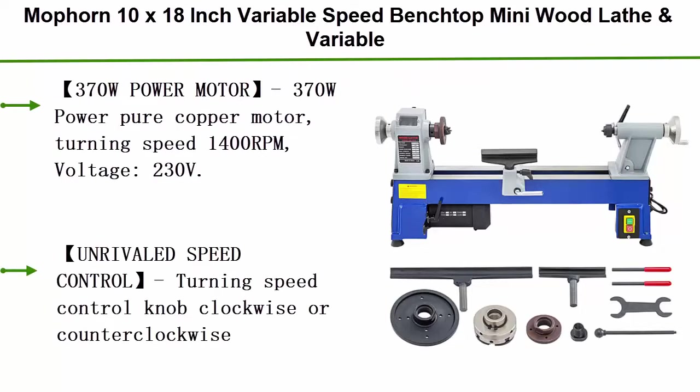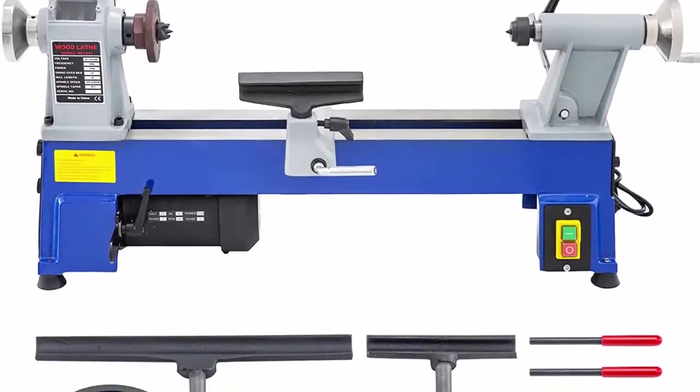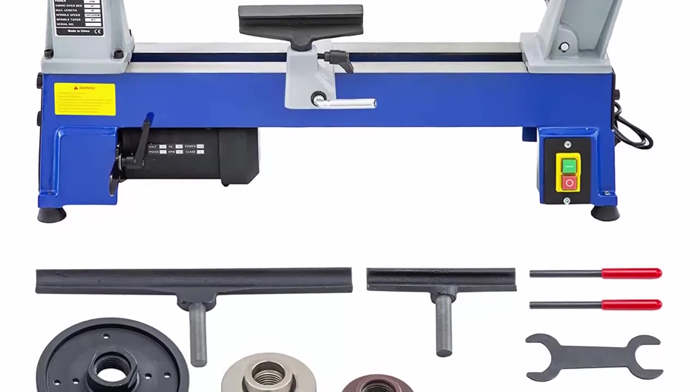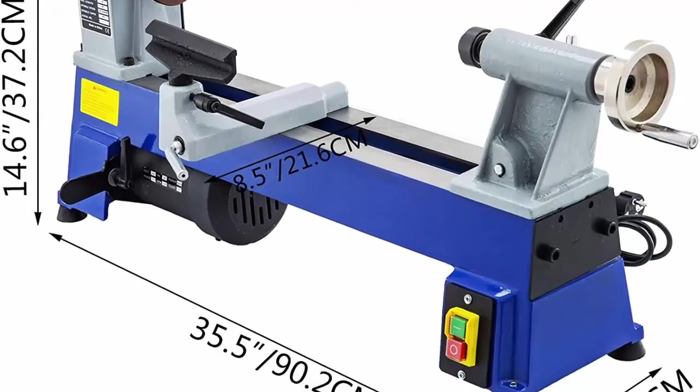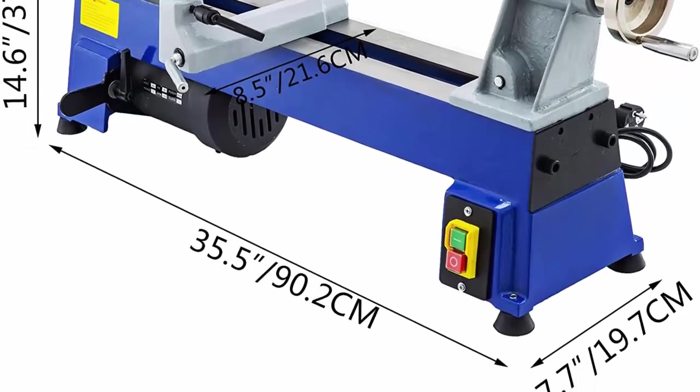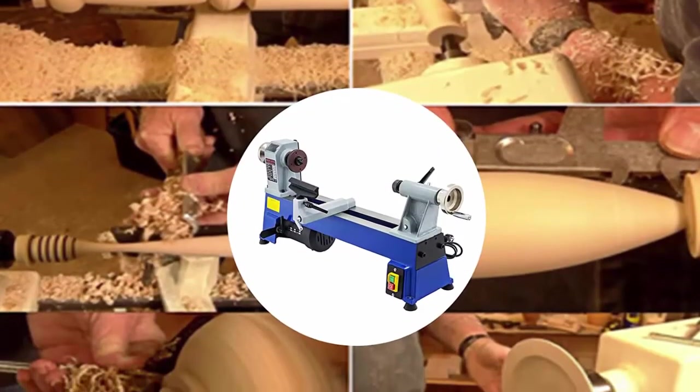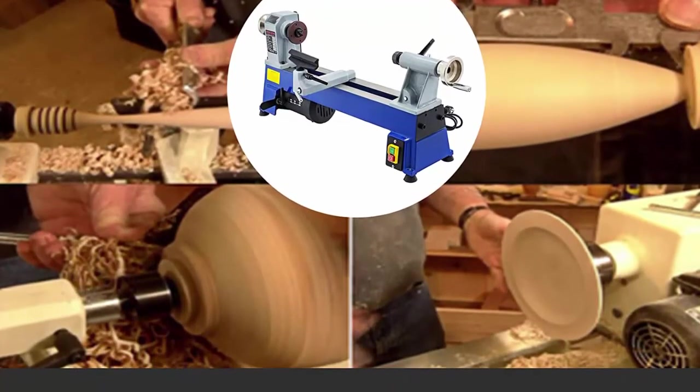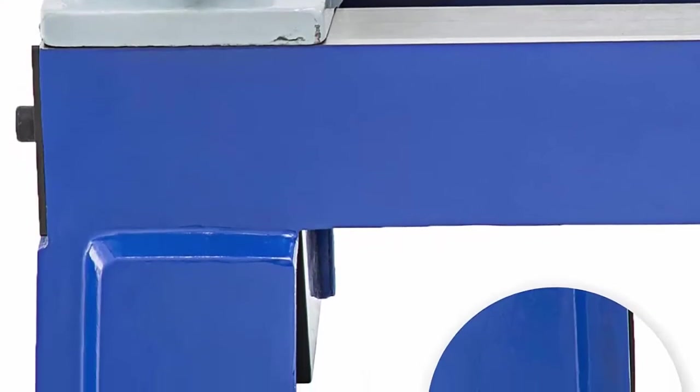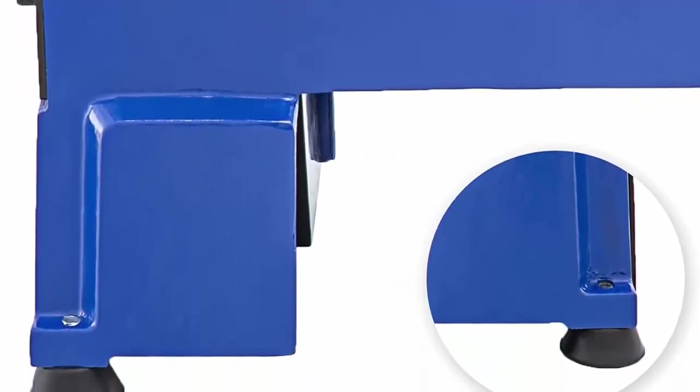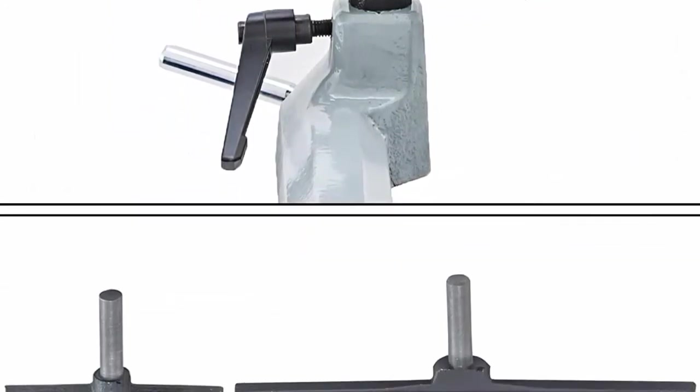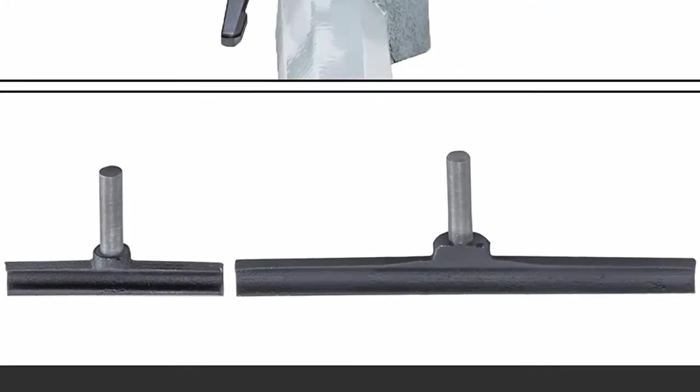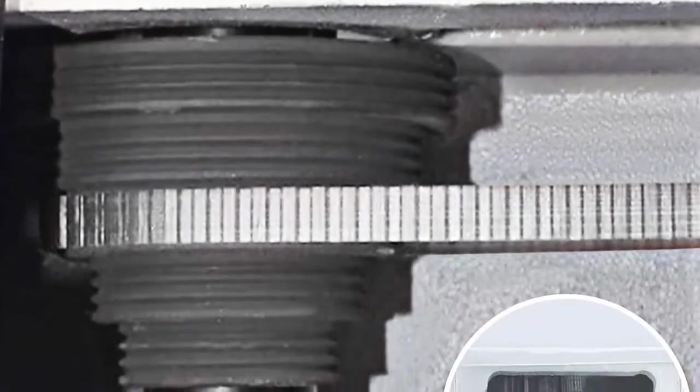Top 7: Mop Horn 10x18 inch variable speed benchtop mini wood lathe. Variable speed 500-3200 RPM with rubber feet. 10x18 inch, 370W power motor. 370W pure copper motor, turning speed 1400 RPM, voltage 230 volts. The powerful motor starts softly, offering maximum safety and low noise. Unrivaled speed control: turning speed control knob clockwise or counterclockwise to adjust speed freely within 500-3200 RPM, including five great speeds: 760, 1,100, 1,600, 2,200, and 3,200 RPM. MT2 spindle. Large work capacity: 18 inches (457mm) distance between centers, swing over bed 10 inches (254mm), high concentricity.